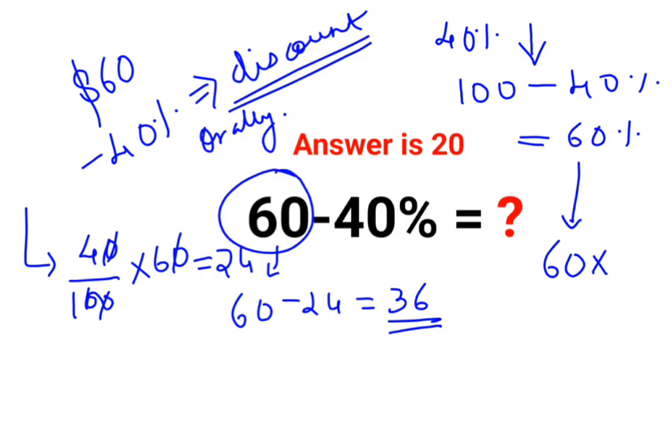So 60 multiplied by 60 percent. The zeros are canceling, so again the answer comes out to be 36. So like I said, all of these can be done orally as well.